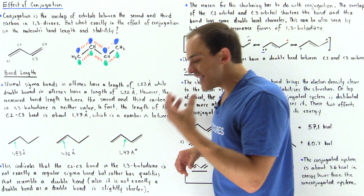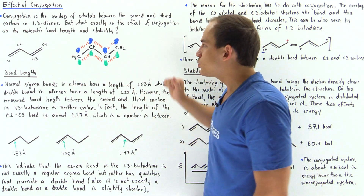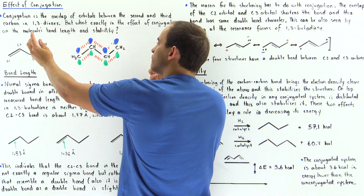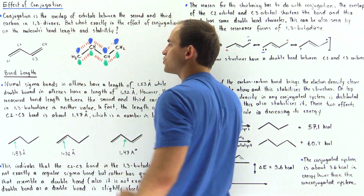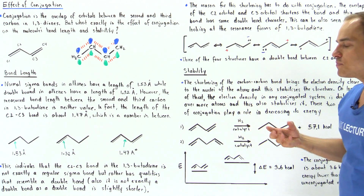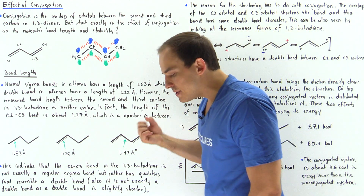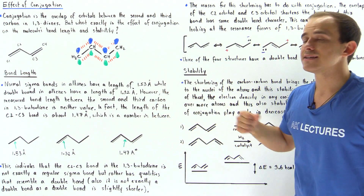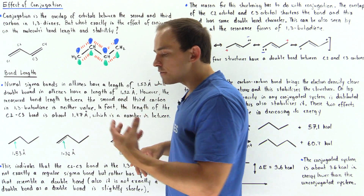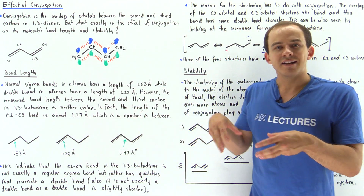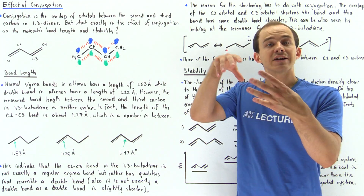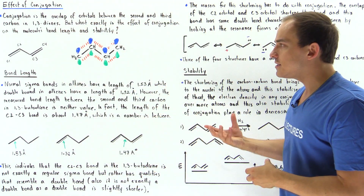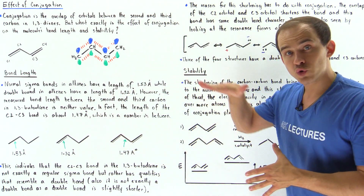Once again, conjugation leads to a decrease in length between the second and third carbon because of the overlap of these orbitals — that overlap pulls the two nuclei closer together. Now, why does conjugation increase the stability of our molecules? Recall from quantum mechanics: whenever an electron can occupy more space, that is, whenever there is more volume for the electron density to occupy, that stabilizes the molecule, decreasing its energy.